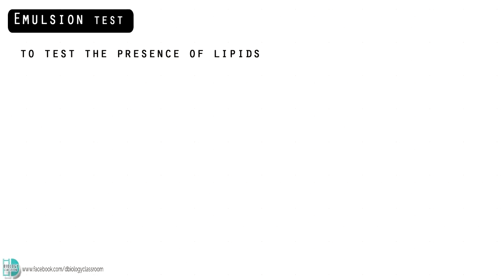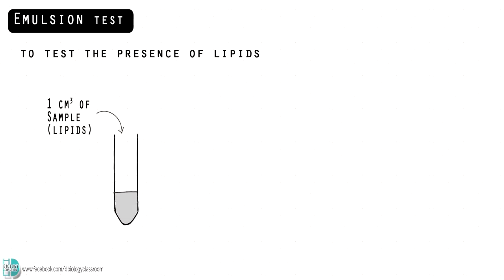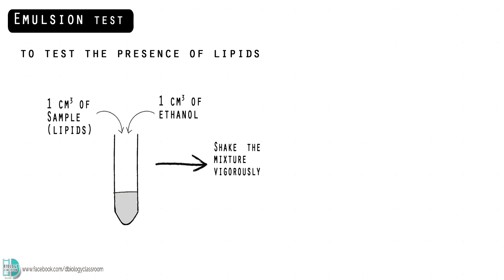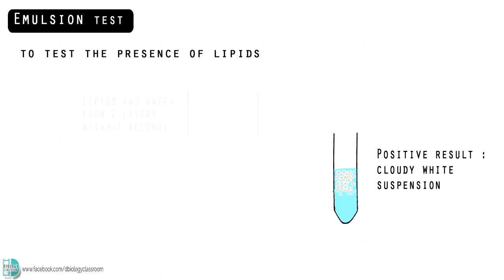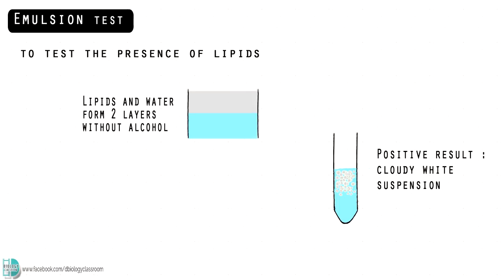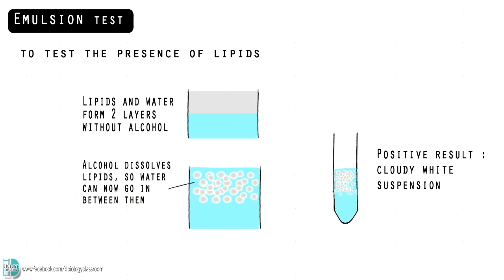The emulsion test is used to test the presence of lipids. Add equal amounts of sample and ethanol to a test tube. Dissolve the lipids by shaking the mixture vigorously, then add an equal volume of cold water into the test tube. A cloudy white suspension shows the presence of lipids. Lipids are insoluble in water but soluble in ethanol. After lipids have been dissolved in ethanol and then added to water, they form tiny dispersed droplets — this is called an emulsion. These droplets scatter light as it passes through the water, so it appears white and cloudy.